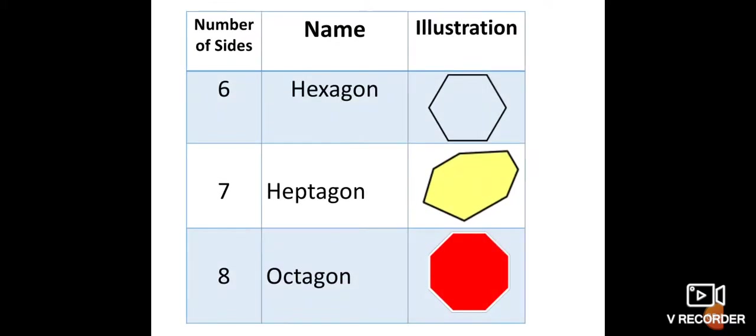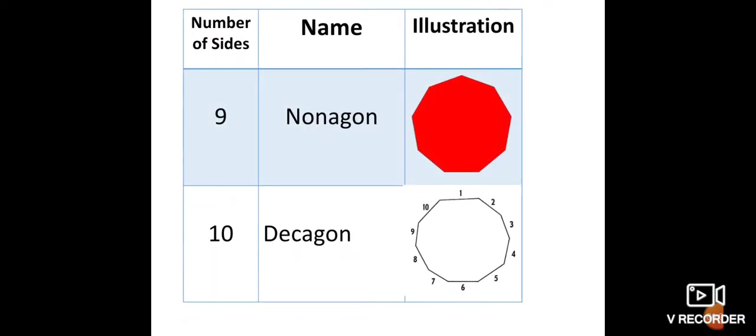Six sides is a hexagon — you have already studied hexagon. Seven sides is a heptagon. Eight sides is an octagon. Nine sides is a nonagon, and ten sides is a decagon. Study well the number of sides and the name for each polygon.